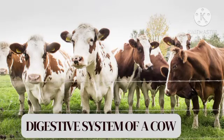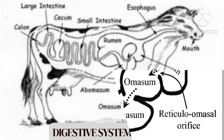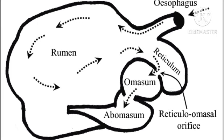Hello everyone and welcome to today's video where we are going to talk about the digestive system of a cow and other ruminants. The first thing you need to know is that a cow has four stomachs. The first one is known as the reticulum, the second one is known as the rumen, the third one is known as the omasum, and the last one is known as the abomasum, which is the final stomach and which looks similar to the human stomach.